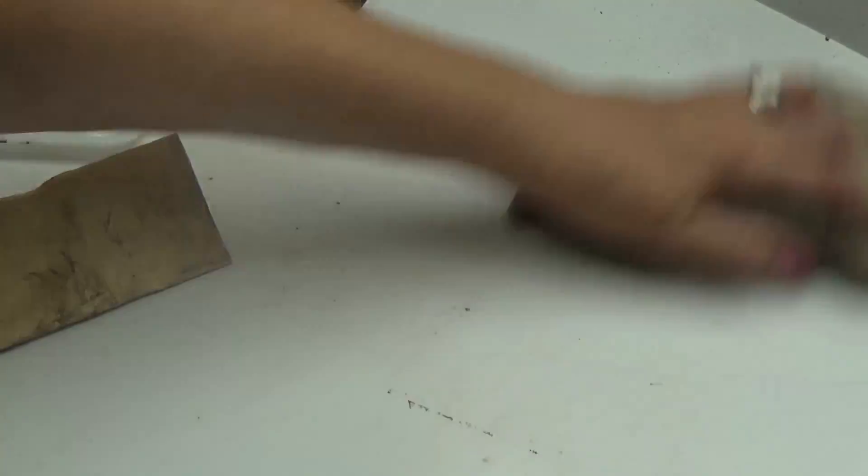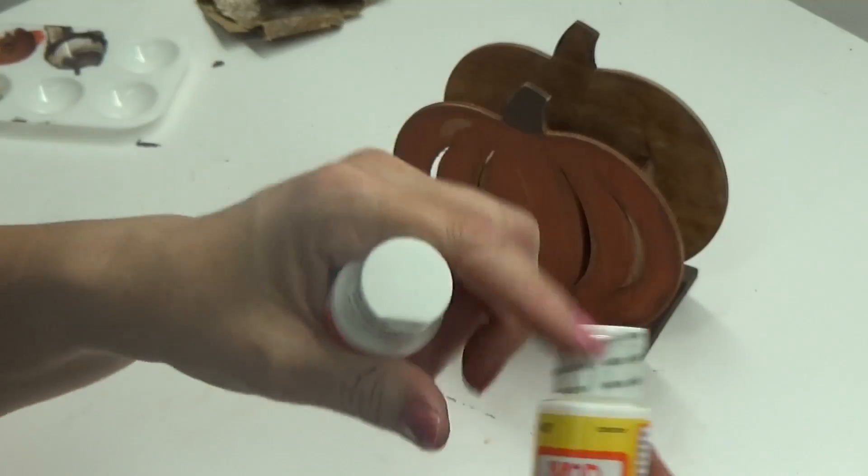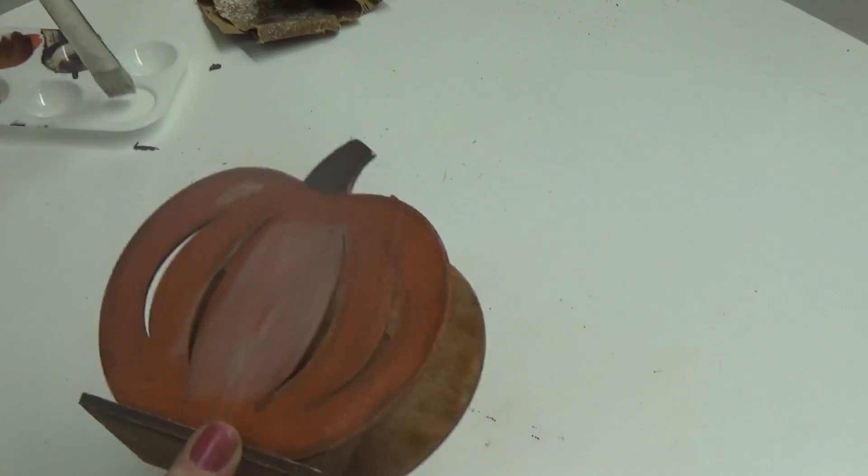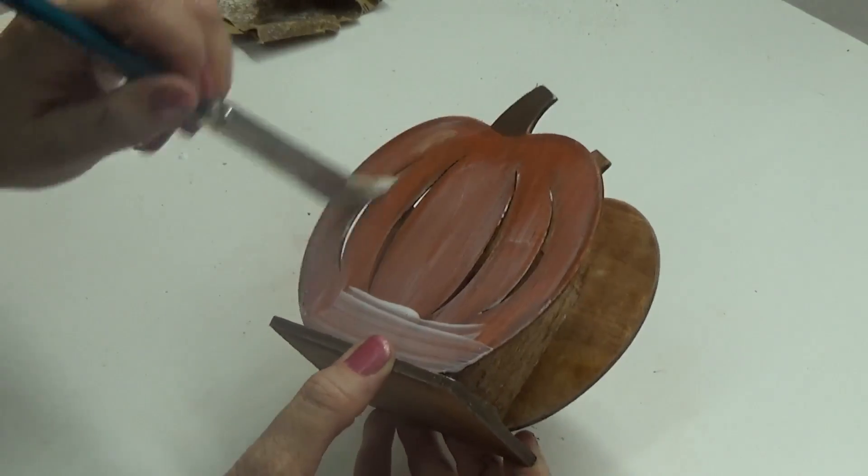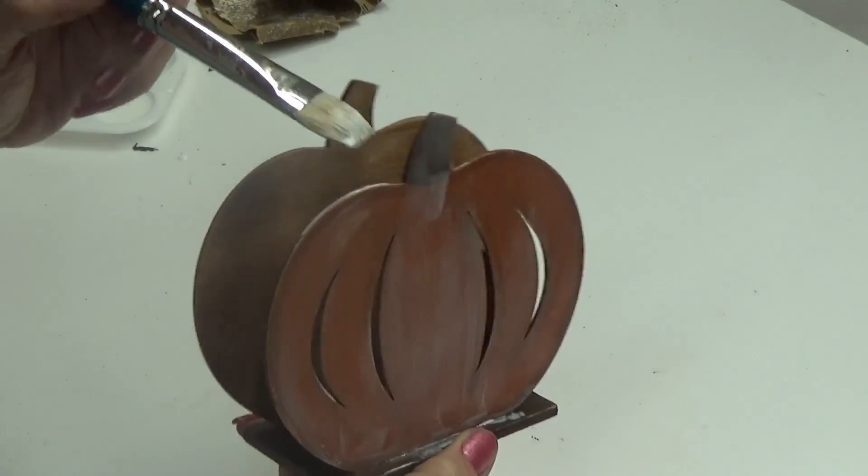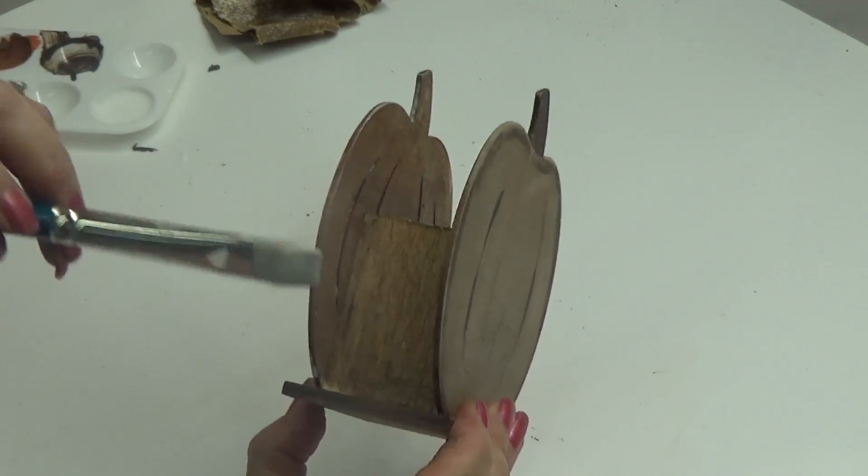Now I'm going to seal it. You can use the gloss or you can use the satin, whichever you prefer. Well, that's not the satin, that's the matte - that's right, I haven't used the satin yet, that's the matte. So you can use any of them you prefer - matte, satin, gloss, whatever look you're going for.